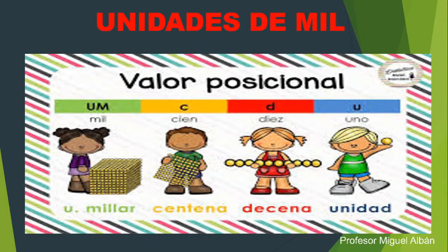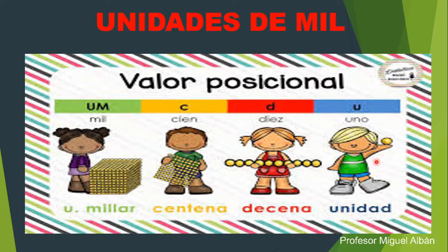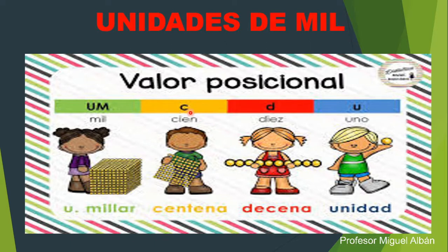Avancemos a la segunda parte: unidades de mil. Tome en consideración las unidades de mil — voy a utilizar un láser como herramienta. Las unidades de mil se representan de derecha a izquierda: U de unidad, D de decena, C de centena, y las unidades de mil o millar. La decena tiene 10 unidades, una centena está formada por 100 unidades, y una unidad de mil por 1.000 unidades.